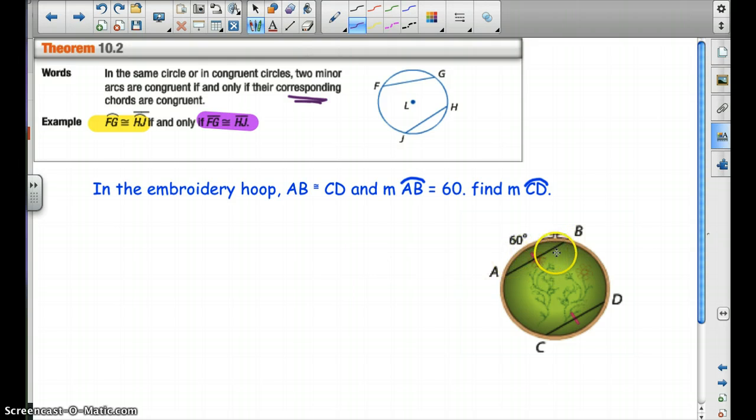So if you notice in this picture right here, AB and CD, those two chords are congruent. And the arc AB is 60. Therefore, we can say the measurement of CD is also going to be 60 because of this theorem up here. And that's all it's saying.